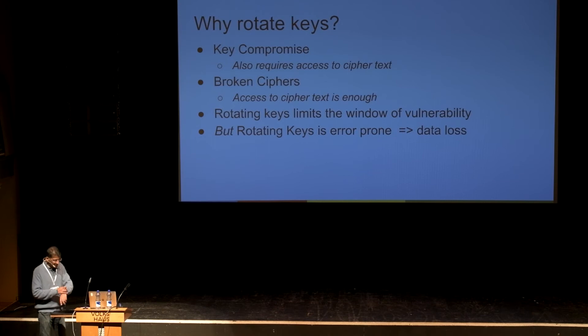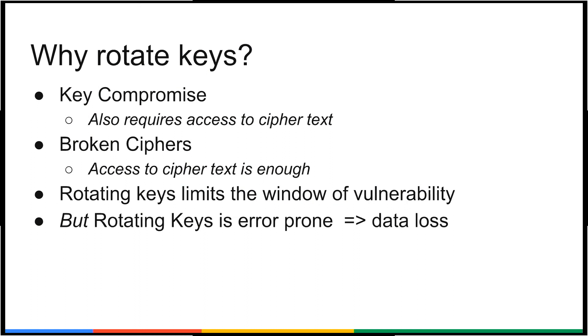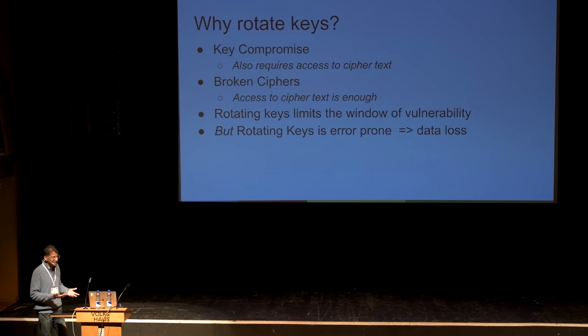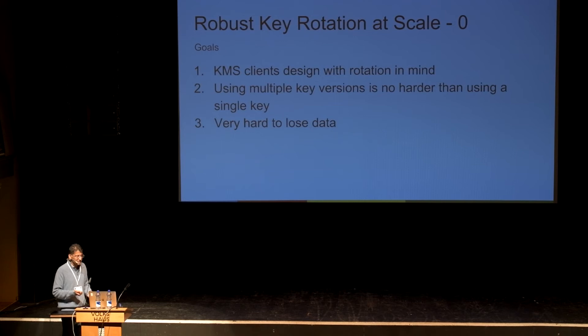I'd like to talk about the key rotation requirement and how it impacts availability. Why do people rotate keys? The two common cases are key compromise or the cipher being broken — both require access to the ciphertext. If you rotate your keys, you can limit the window of vulnerability whether you detect it or not. Rotating keys is fairly error-prone, and if you mess up it leads to data loss. So our goal is that clients of the KMS design with rotation in mind when designing their systems.